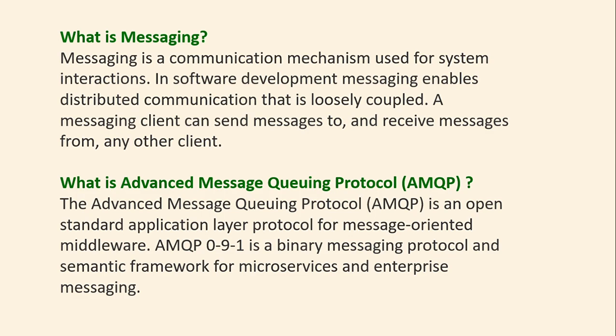What is AMQP (Advanced Message Queuing Protocol)? AMQP is an open standard application layer protocol for message-oriented middleware. AMQP 0-9-1 is a binary messaging protocol and semantic framework for microservice and enterprise messaging.